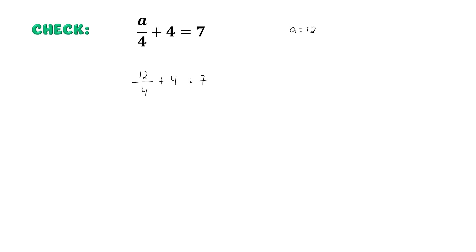Either way, there are multiple ways that you can approach solving or checking your answer for this equation. So what I am going to do is simplify my fraction where I have 12 over 4. Remember that 12 over 4 is the same thing as 12 being divided by 4, and when 12 is divided by 4, that is equal to 3.